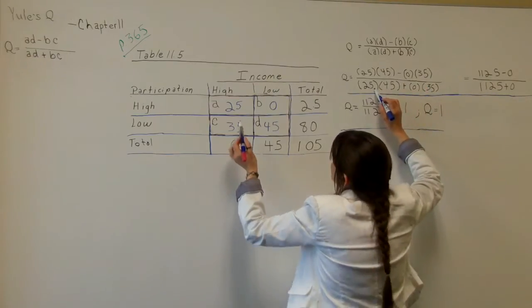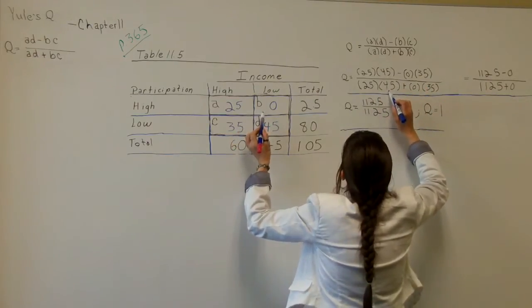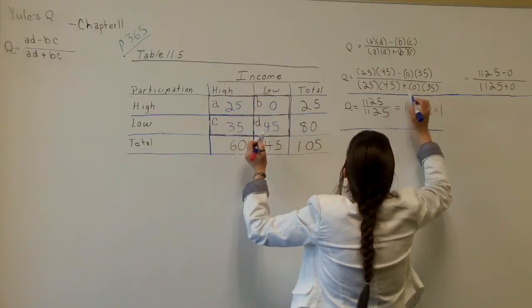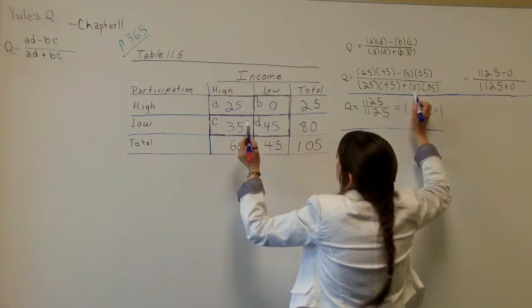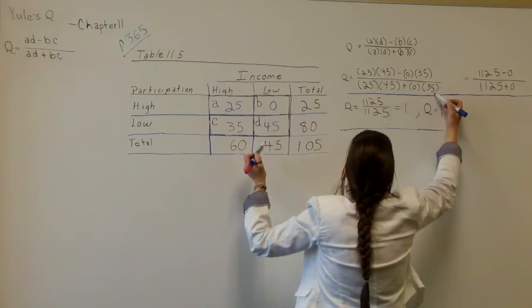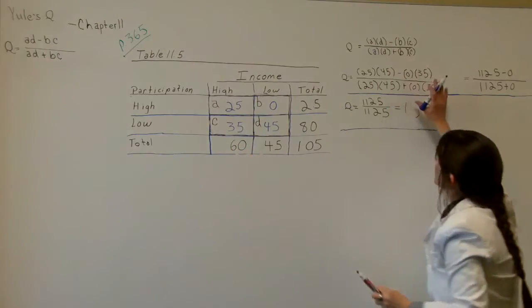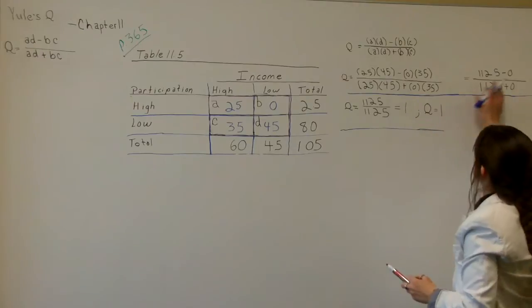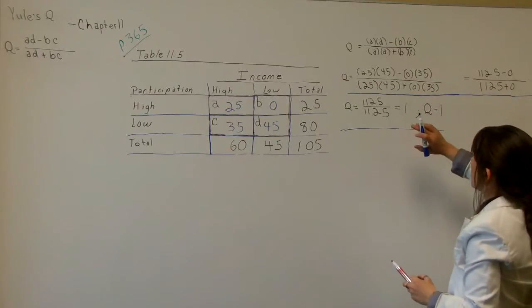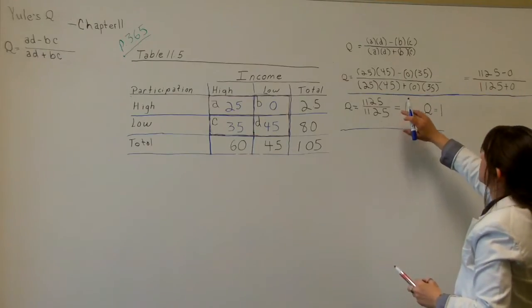So again, A, 25, times D, 45, plus B, 0, times C, 35. Show the professor all the work, okay? Because I think in the textbook they don't always show all the steps. But show your professor all the work.